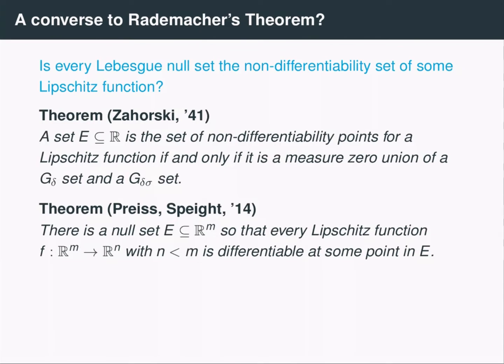So Preiss and Speight have shown that there exists a Lebesgue measure zero set in R^m so that any Lipschitz function from R^m into a strictly smaller Euclidean space is differentiable at some point in the set E. So this is a universal differentiability set.